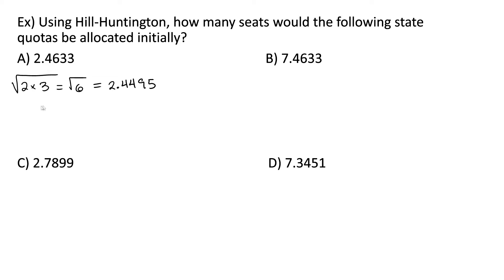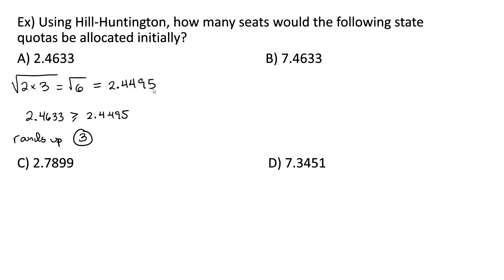Our initial quota of 2.4633 is in fact greater than its geometric mean of 2.4495, so this would round up. They would initially be allocated three seats. Normally 2.46 would round down because it's less than 0.5, but the rounding rule here says we're comparing the number to its geometric mean. If it's greater than or equal to its geometric mean, round up. If it's less than its geometric mean, round down. So you can see numbers that would normally round down can round up in Hill-Huntington.